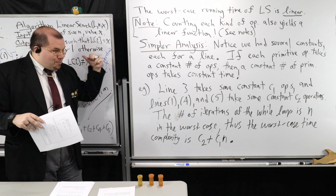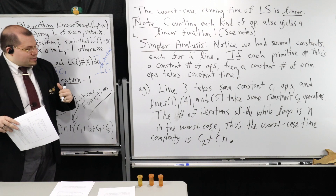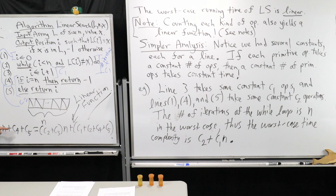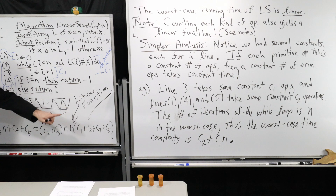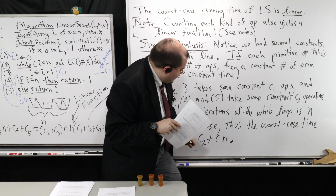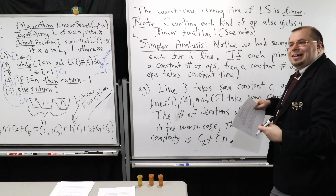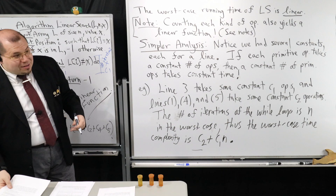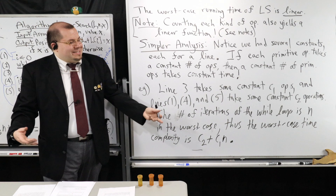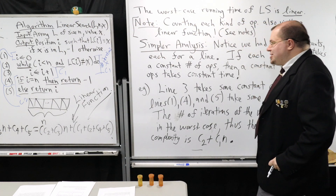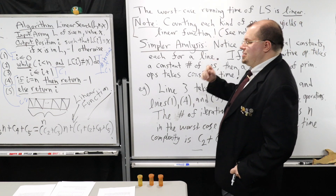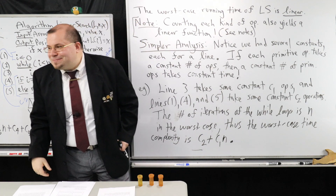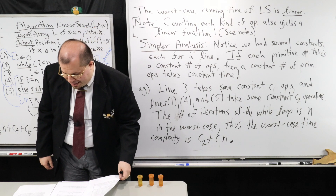The number of iterations of the while loop is n in the worst case. Thus the worst-case time complexity is c2 plus c1 times n. Notice that I still get a linear function. If you look carefully at what I did in our table, all I've done is truncated things. At the end of the day, when I simplified the complexity function, I had (c2 plus c3) times n plus a bunch of constants — the exact same form. I cut corners but got the same outcome; they're just different names for the constants. All I'm doing is grouping constants rather than naming each one separately.